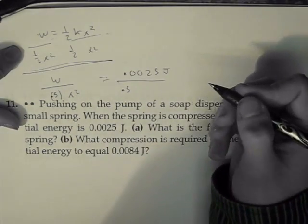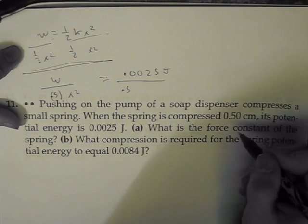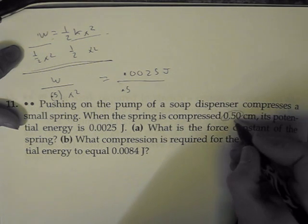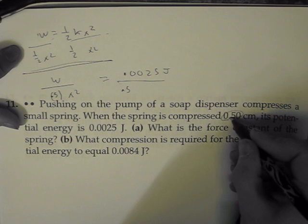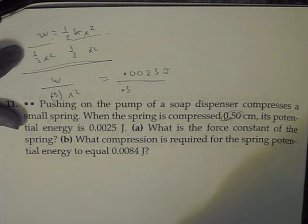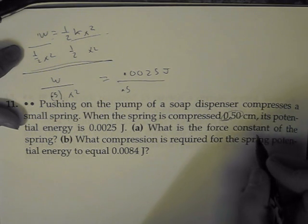The next part is going to be 0.5 x squared, except since it's in centimeters—this is not in meters—you would just move the decimal point 2 over, since there's 100 centimeters in a meter, so that would be 0.005.